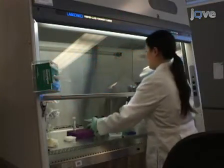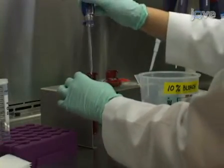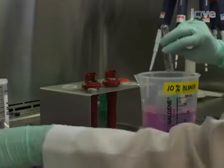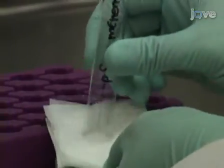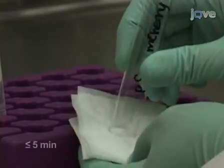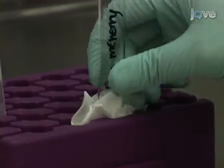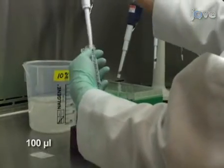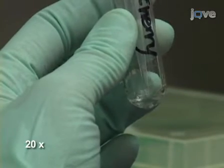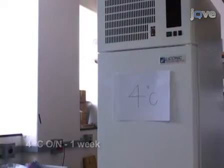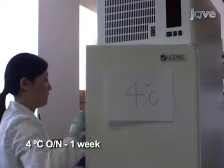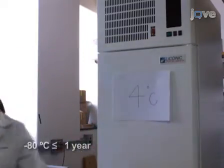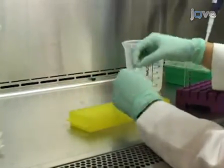After centrifugation, return to the tissue culture hood and invert the tube to pour the supernatant into a container with 10% bleach. Use a Kim wipe to absorb excess liquid around the pellet and invert the tube in a rack for no more than 5 minutes until ready to re-suspend. To re-suspend the viral pellet, use a filter tip to add 100 microliters of sterile pre-filtered PBS to your tube, then pipette up and down about 20 times. Leave the virus at 4 degrees overnight to complete re-suspension. You can store viral preps at 4 degrees for about 1 week and at minus 80 degrees for up to 1 year.